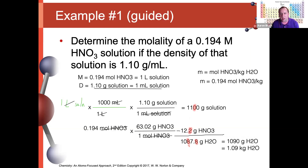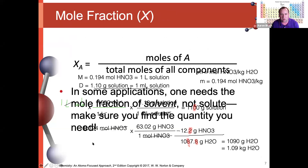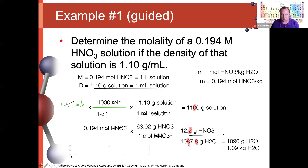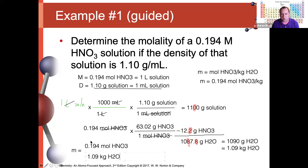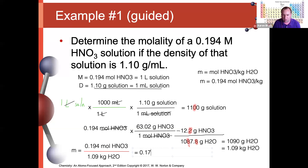Now we have everything: 0.194 moles of HNO3 divided by 1.09 kg of water. Molality = 0.194 / 1.09 = 0.178 molal nitric acid (to three significant figures).